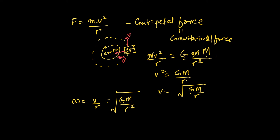The angular velocity — and hence the frequency and the period for one orbit — are dependent on the radius. The period T is given by 2π divided by omega, because a circle is 2π radians and omega is in radians per unit time. The frequency is the reciprocal: omega divided by 2π. Let's work through an example.